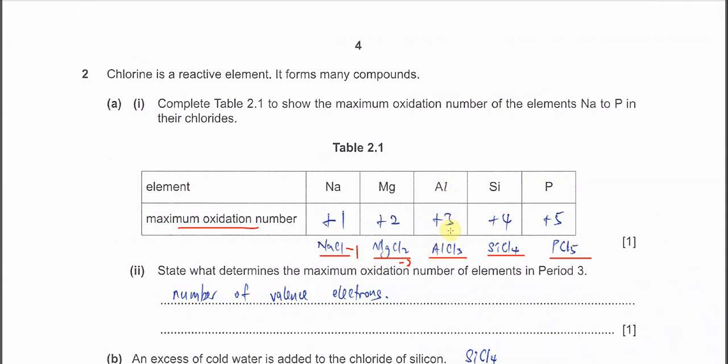Magnesium must be +2. Aluminum therefore will be +3, silicon will be +4, phosphorus will be +5 because chlorine is -5, phosphorus must be +5 to make it neutral. Once you complete this table, one mark.